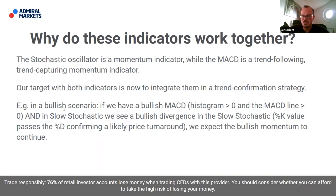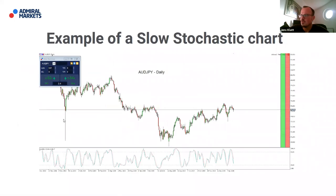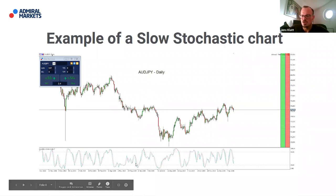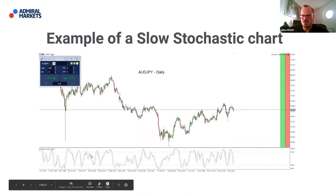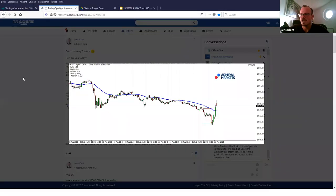We expect bullish momentum to continue. What is bullish divergence? A bullish divergence occurs when the market — the price of the asset — makes a new low, but this is not confirmed by the oscillator. The market makes lower lows while the oscillator does not — let me find a better example to illustrate this, because the slow stochastic isn't showing it clearly on the current chart.